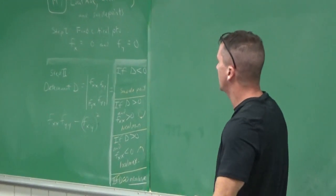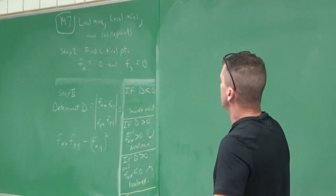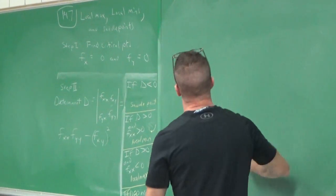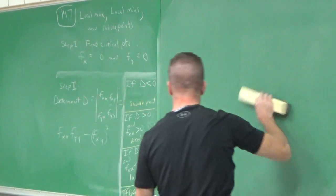Everyone, we'll be doing 14.7 again and 14.8. 14.7 will help us find the local max, the local min, and the saddle points of a multivariable function.